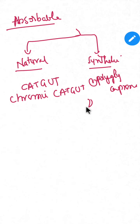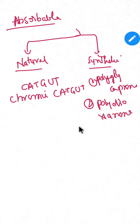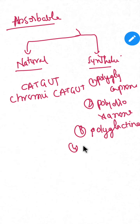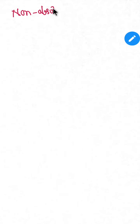Second is polydioxanone, third one is polyglactin, and fourth one is Dexon. So these are the synthetic observable sutures. Now let's go to non-observable sutures.